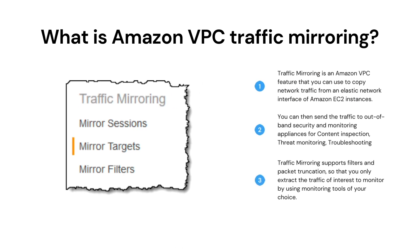Next question is: what is Amazon VPC traffic mirroring? Traffic mirroring is an Amazon VPC feature that you can use to copy network traffic from an elastic network interface of Amazon EC2 instances. You can then send the traffic to out-of-band security and monitoring appliances for content inspection, threat monitoring and troubleshooting. The security and monitoring appliances can be deployed as individual instances or as a fleet of instances behind a Network Load Balancer with a UDP listener. Traffic mirroring supports filters and packet truncation so that you only extract the traffic of interest to monitor using monitoring tools of your choice.